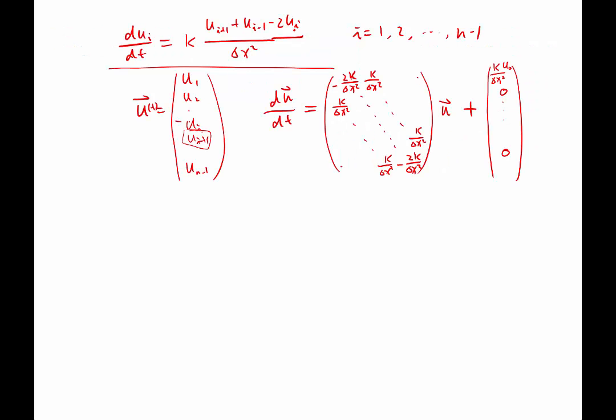For the last one, it will be kappa over delta x squared times u n, right? These are given numbers and you know them. So, this is a constant term. At the end, what you'll get is du dt equal to au plus b. Well, a is that matrix, b is that vector. That's a standard ODE you can solve using standard methods.